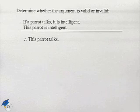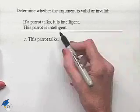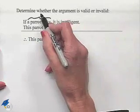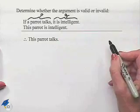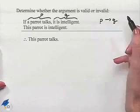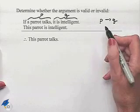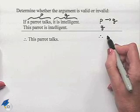Let's try to determine whether an argument is valid or invalid. If a parrot talks, it is intelligent; this parrot is intelligent; therefore this parrot talks. We can designate statement P as 'a parrot talks' and statement Q as 'it is intelligent.' Our first premise is: if P then Q. The second premise, 'this parrot is intelligent,' is statement Q.